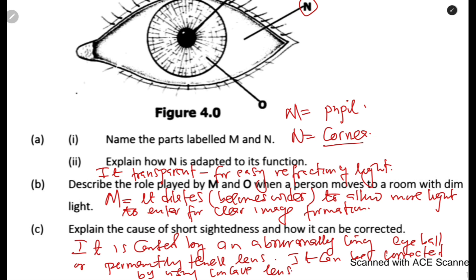So, that is how it is caused by abnormally long eyeball or permanently thick lens. And it can be corrected by using concave lens.